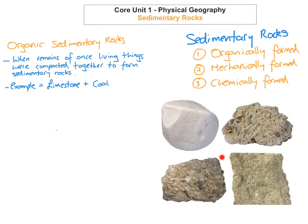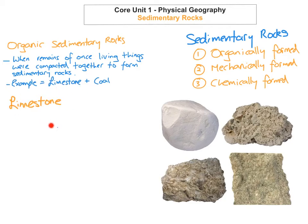Looking at limestone: one thing to note is that limestone varies in colour, due to the impurities within the rock. A good fact to know is that limestone is found in 31 out of the 32 counties in Ireland, with Wicklow being the only exception. There are many different types of limestone, including dolomite limestone, chalk limestone, and carboniferous limestone.